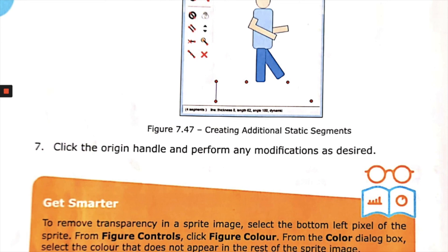Set the line thickness to 0 for these segments. Select a segment and click the Static or Dynamic Segment icon — the selected segment becomes static. Repeat for all segments except one; the available segments are now connected, as shown in figure 7.47. To remove transparency in a sprite image, select the bottom-left pixel of the sprite, then from figure controls click Figure Color and select a color that does not appear in the rest of the sprite image.